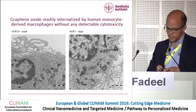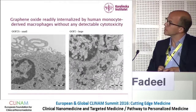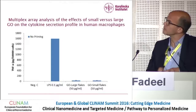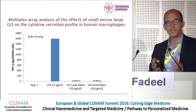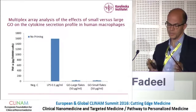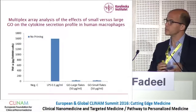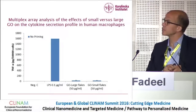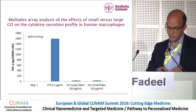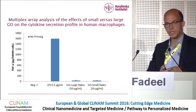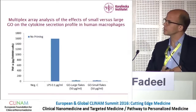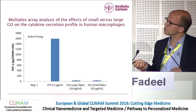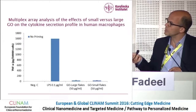Large and small graphene oxide flakes in this cell model are both non-toxic. We then did a multiplex array to profile cytokine and chemokine secretion, using a commercially available panel of some 26 or 27 cytokines and chemokines. Focusing on one important example — namely TNF-alpha — we don't see TNF-alpha production using endotoxin-free graphene oxide, either small flakes or large flakes. Our positive control is LPS.